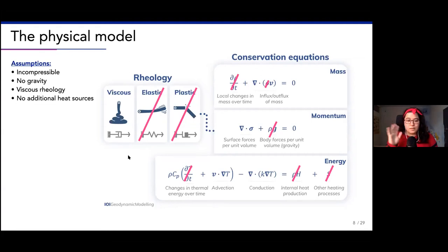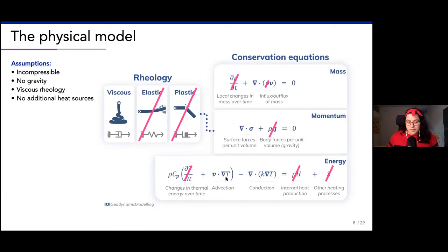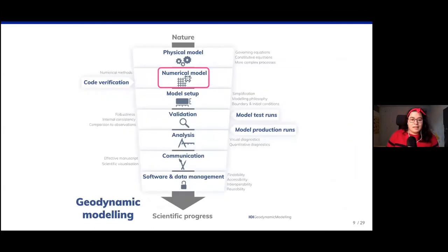We're going to say there are no additional heat sources, so those terms fall out, and we're going to look at steady state - just one simple steady-state temperature field that we're interested in, seeing what the effect would be of adding temperature-dependent thermal parameters. So we have done the physics and we solve these equations for velocity V and temperature T.